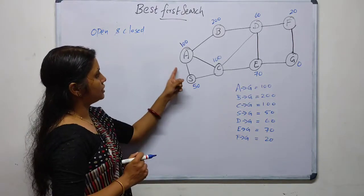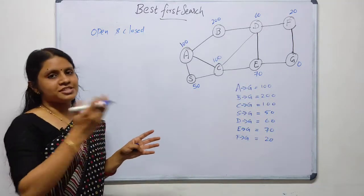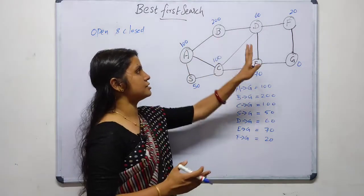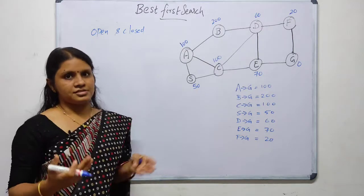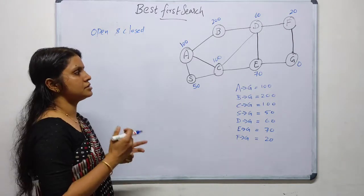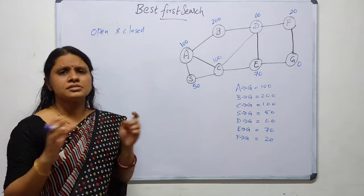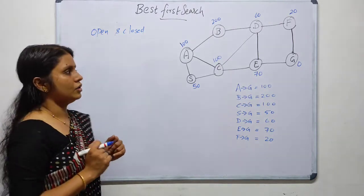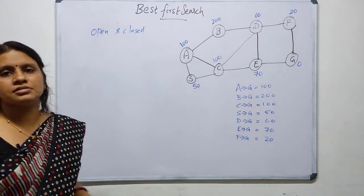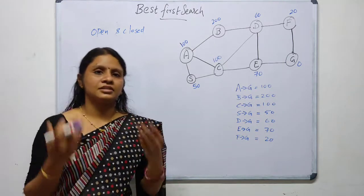A graph is given where the initial state is A and the goal state is G. We have to find the shortest path from A to G. Values like 100, 200, 60, 20 are given — these are the distances, called Euclidean distances, which we discussed in the last video. These are heuristic values representing the straight-line distance between two points. For example, A to G is 100, B to G is 200, C to G is 100, and so on — all distances to the goal are given.